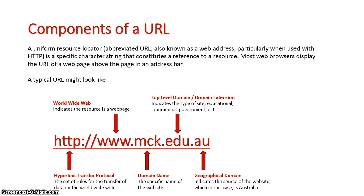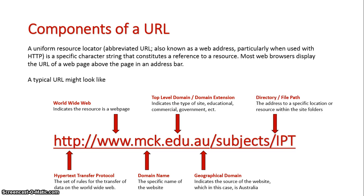Once we go to a website, we can navigate to other pages on it. We do that by going to sub-pages, clicking on buttons or resources. Another directory path will appear, showing that we are going to sub-pages within that site, and this is how we access specific resources.